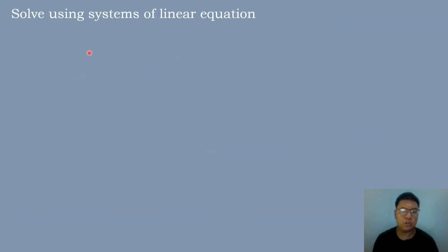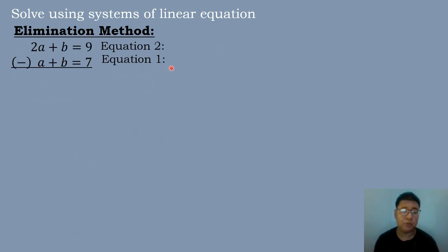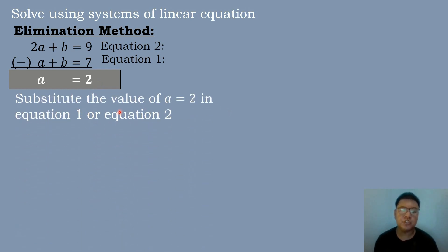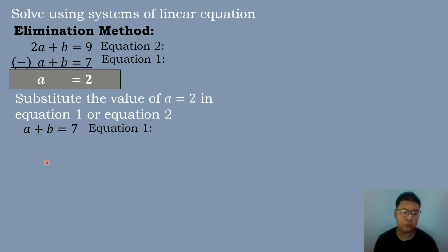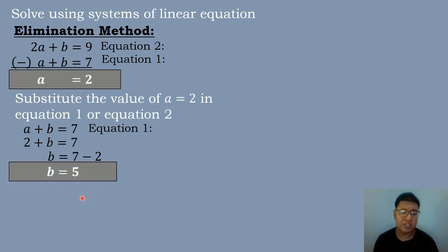The next step is to solve using systems of linear equations. We will use the elimination method. Equation 2 minus equation 1: 2a plus b equals 9, minus a plus b equals 7. So 2a minus a is a, b minus b is 0, and 9 minus 7 is 2. So a is equal to 2. Substitute the value of a, which is 2, into equation 1: a plus b equals 7. So 2 plus b equals 7, and transposing gives b equals 7 minus 2, which is equal to 5.